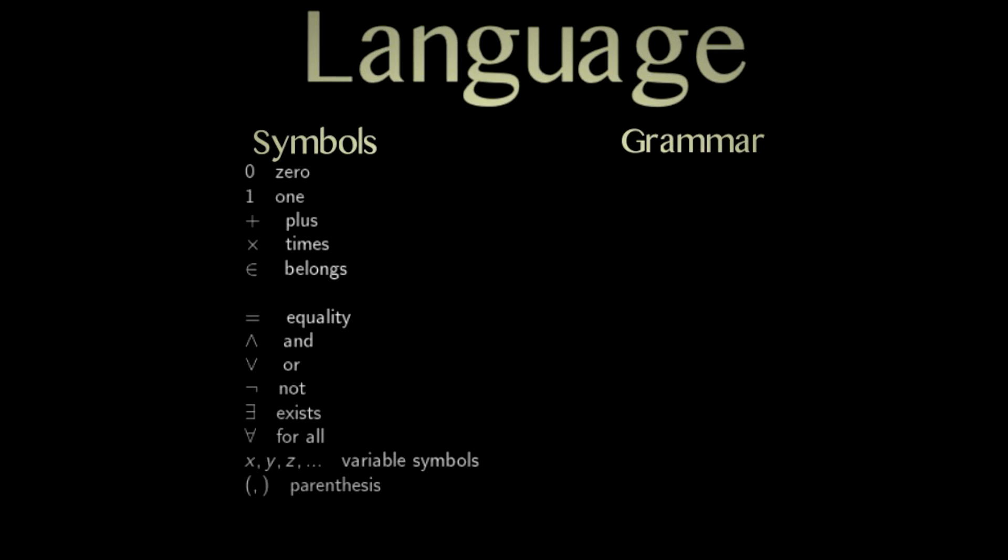And those are variables. You can change them for some other symbols if you want to work with something else. These ones are good enough. The latter ones, equality and or not exist for all, the variable symbols and the parentheses are called the logical symbols. And they are essentially fixed in all first order logic. You can modify them slightly. For instance, here, you can add the implication symbol because you can just define it from the other. So you may add it or not. But essentially, these are the logical symbols.